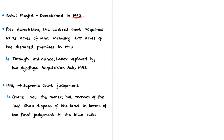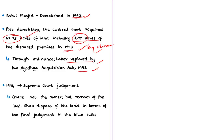The Babri Masjid was demolished in 1992. Post demolition, the central government acquired the entire 67.73 acres of land, including the 2.77 acres of the disputed Ram Janmabhoomi–Babri Masjid premises in 1993 by issuing an ordinance, later replaced by the Ayodhya Acquisition Act of 1993. However, in 1994, the Supreme Court revived the title suits, stating that the central government would not be the owner but only a receiver of the land, to be disposed of in terms of the final judgments.